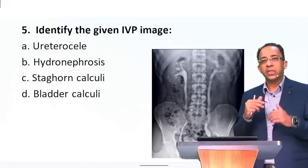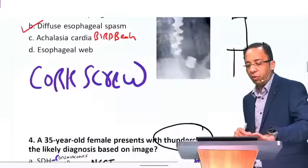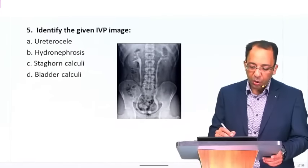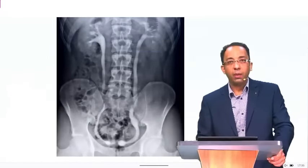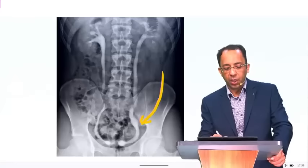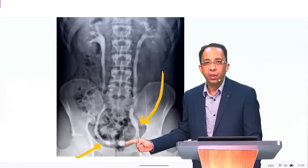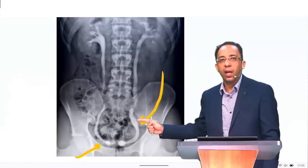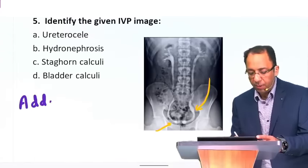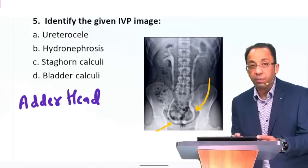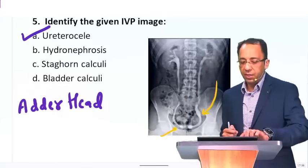Sometimes you will see a system-wise distribution in your exam — one question on brain, one on barium, one on bone. This is the pattern of FMG radiology. The question is: identify the IVP image shown. I want you to look at the distal-most part of the ureter — it is showing congenital dilatation. At the UV junction you can see further dilatation looking like the head of a cobra. This is called the adder head appearance. The condition is ureterocele — congenital dilatation of the distal ureter.